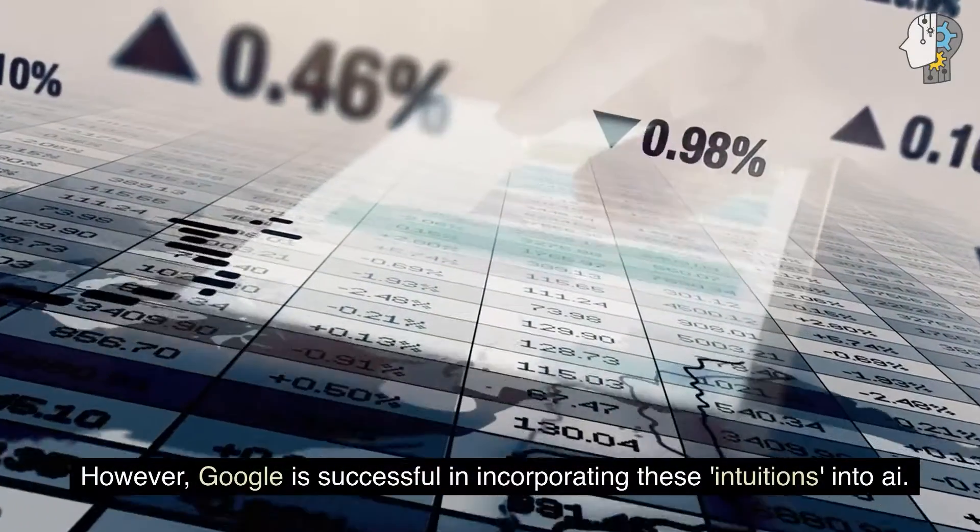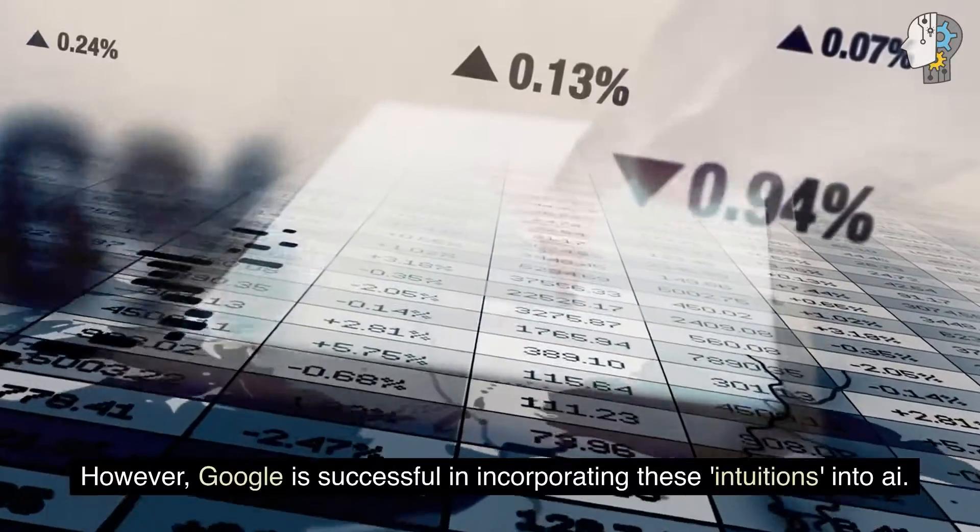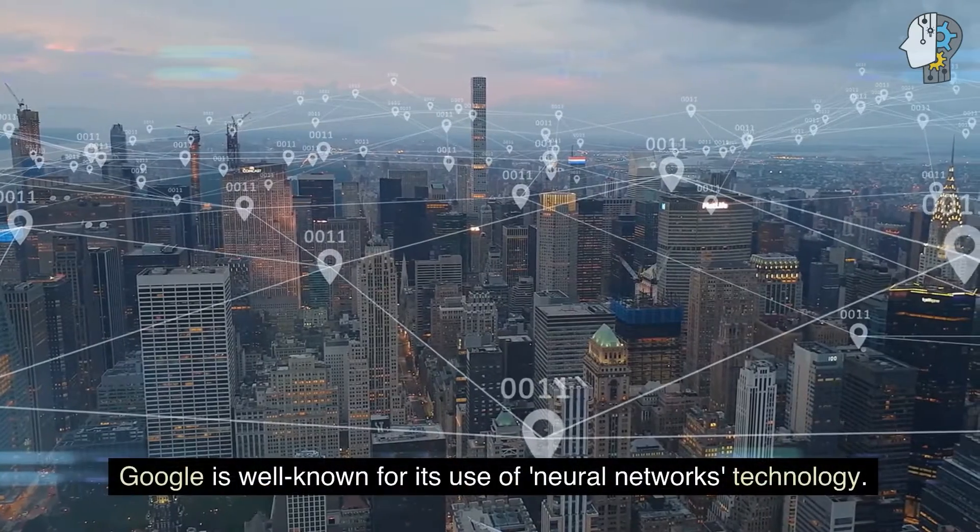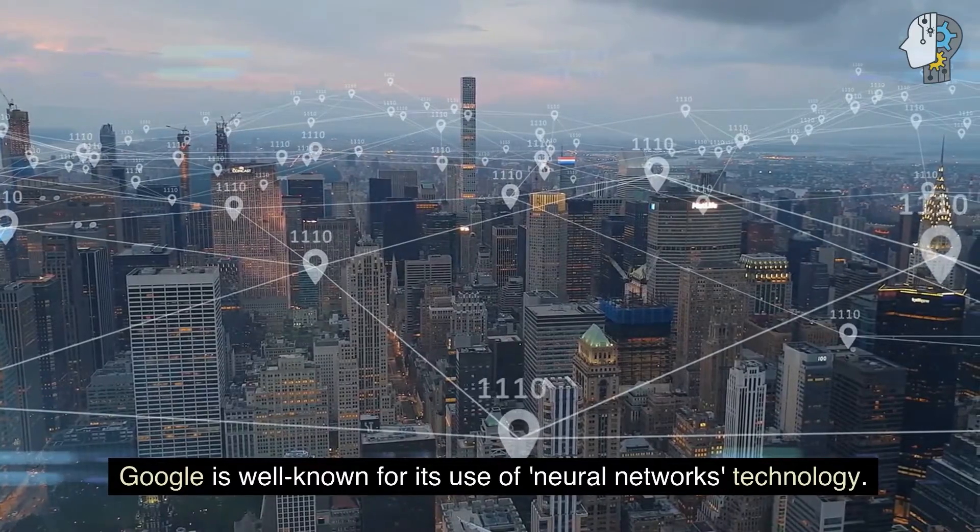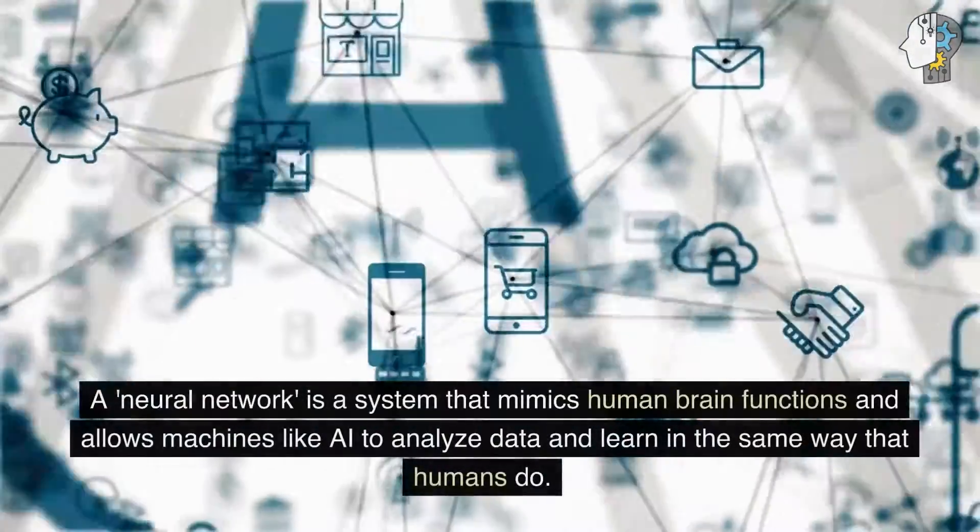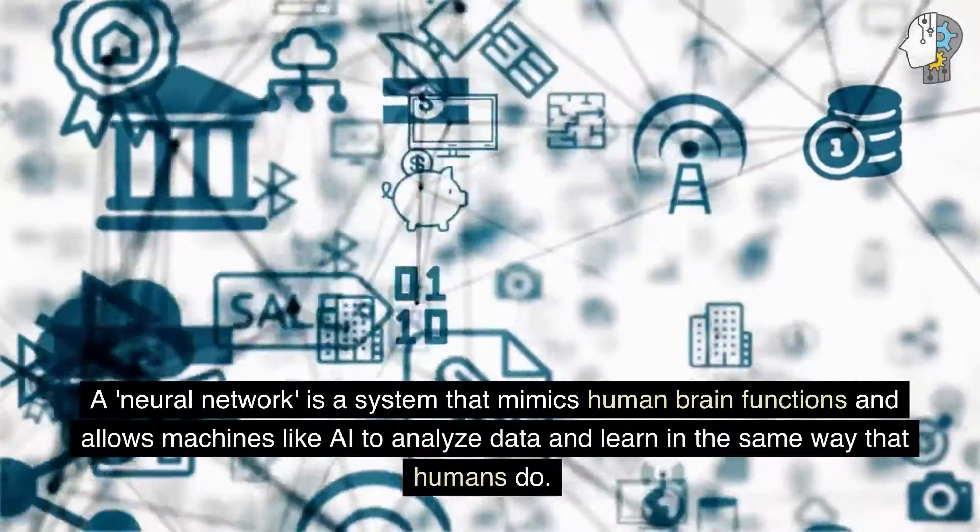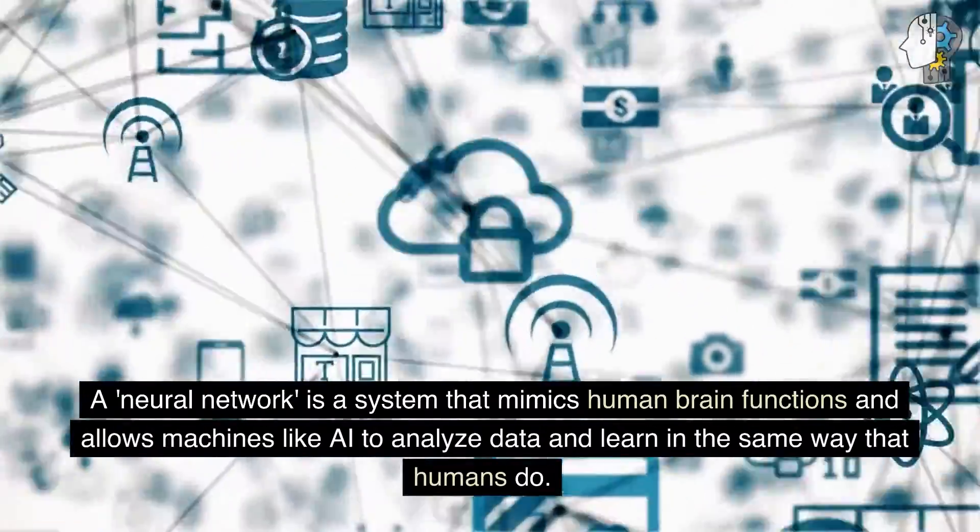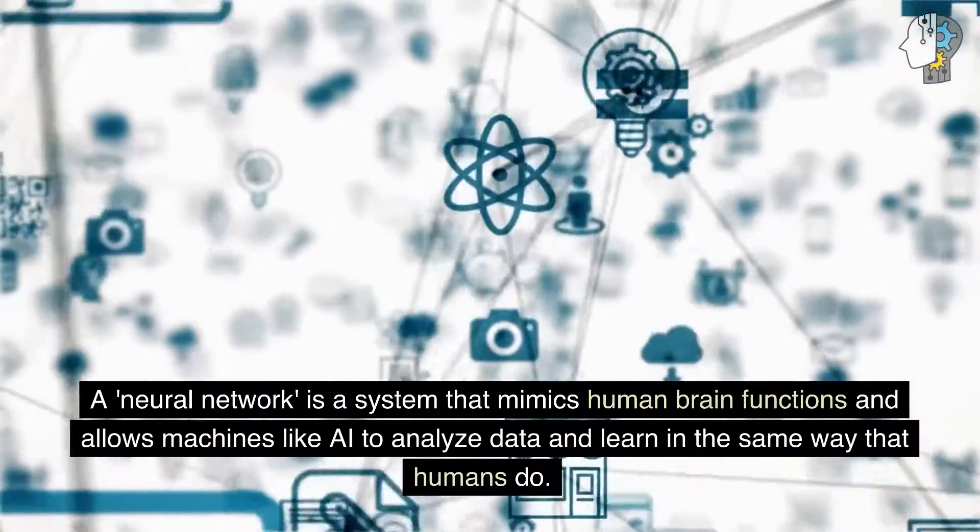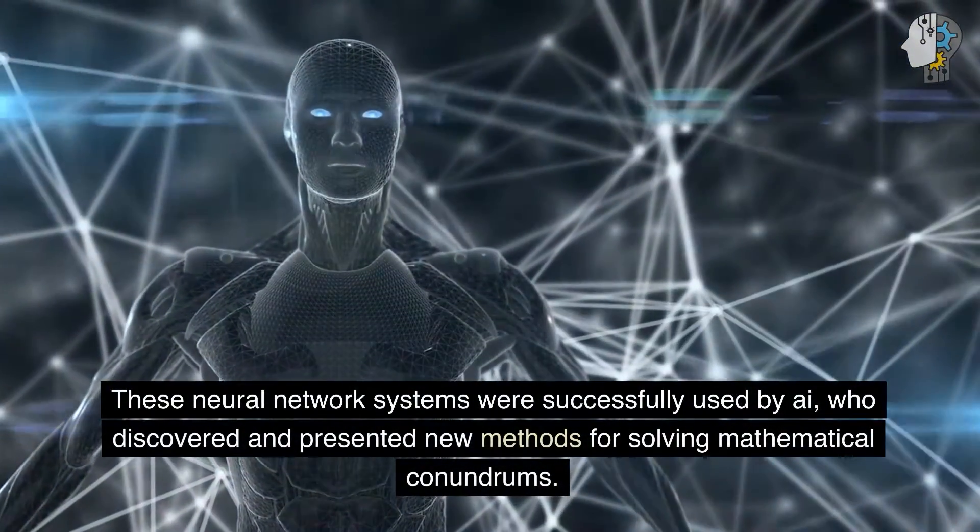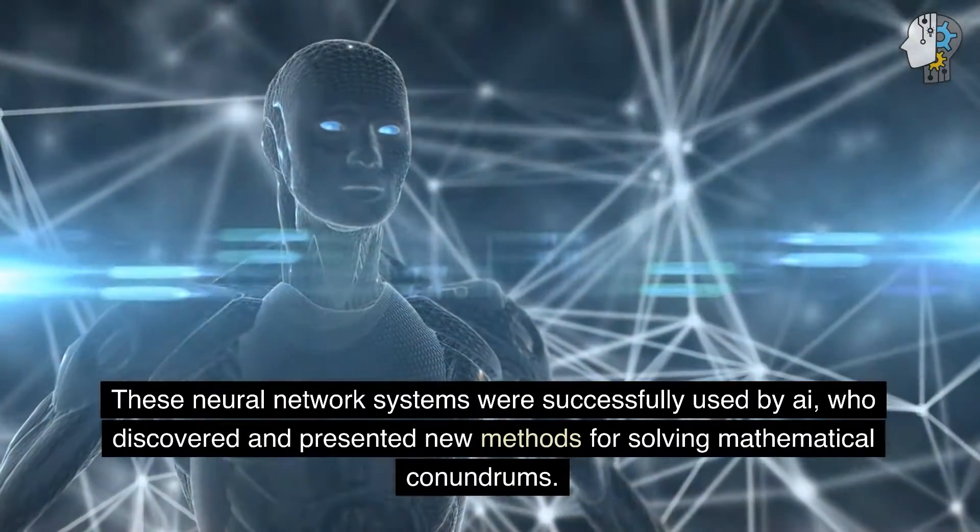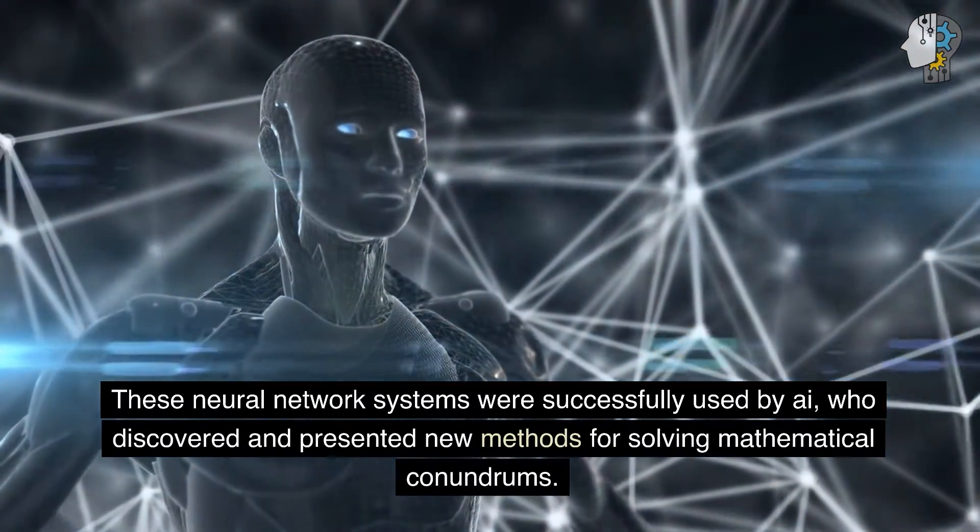However, Google is successful in incorporating these intuitions into AI. Google is well known for its use of neural networks technology. A neural network is a system that mimics human brain functions and allows machines like AI to analyze data and learn in the same way that humans do. These neural network systems were successfully used by AI, who discovered and presented new methods for solving mathematical conundrums.